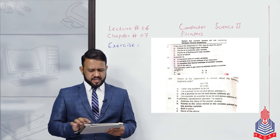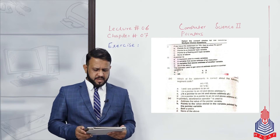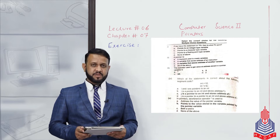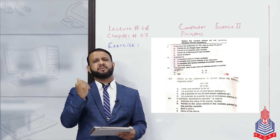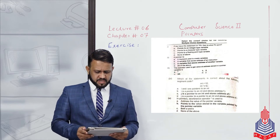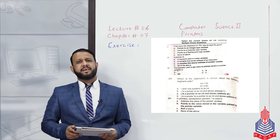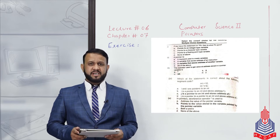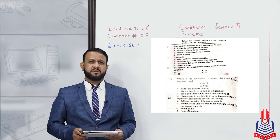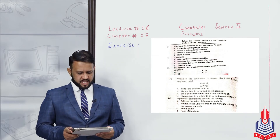Now our next MCQ — you can see it on screen. Which of the statements is correct about the following code segment? The code is: integer i is equal to 10, integer *j is equal to address-of operator i. Here we created a variable i, assigned it the value 10 — initialized it during declaration — and then created a pointer j.